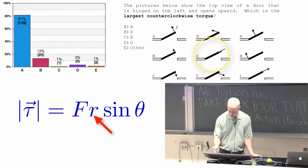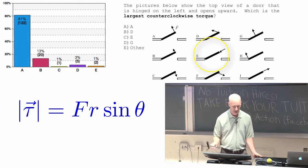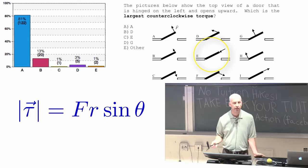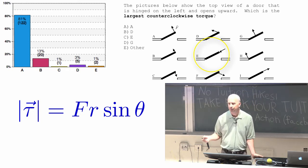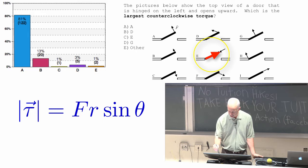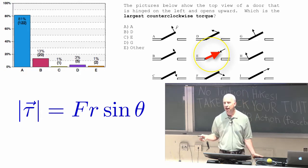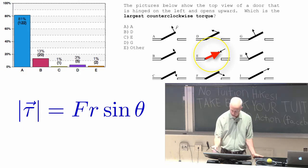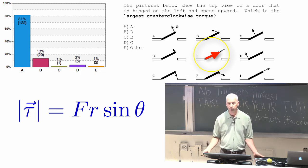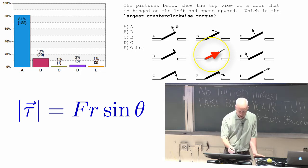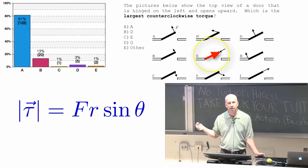The R vector for E is all the way out to the end of the door. So R is big, the force is big, but sine of theta, R is out to the right, or up here and to the right, and F is down and to the left. So they are opposite to each other. R and F are opposite to each other in this middle picture. In other words, theta is 180 degrees, or pi, and sine of pi is zero, so no torque.